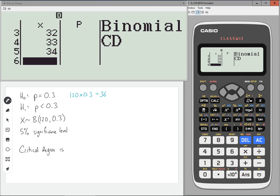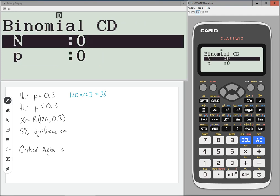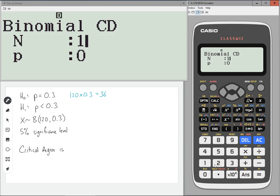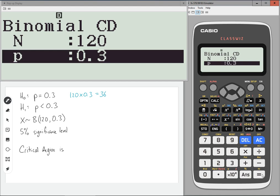Now I don't know whether this is going to give me the overlap values that I want, but we will see. If not, we can always put in some more numbers. So press equals on that. N is 120 and p is 0.3.